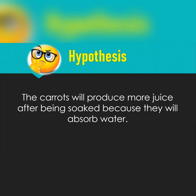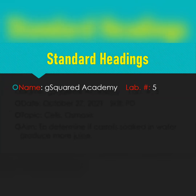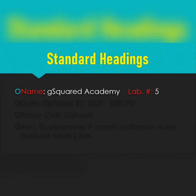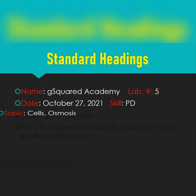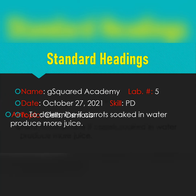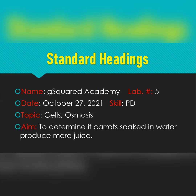As usual, you have your standard headings — G Squared Academy, this is lab number five so check out the other videos if you haven't. The date, the topic — Planning and Designing — we're looking at cells and osmosis, and the aim is to determine if carrots soaked in water produce more juice.